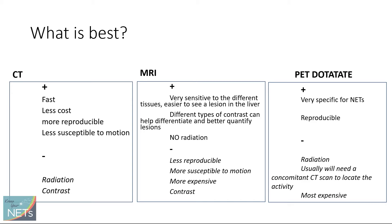MRI is very sensitive to different tissues, making it easier to see a lesion in the liver compared to normal liver parenchyma. Different types of contrast can be used to help differentiate and better quantify lesions, and there's no radiation. However, it is less reproducible, more susceptible to motion because it takes longer to acquire, and more expensive. PET dotatate is very specific for neuroendocrine tumors and very reproducible, but it does use radiation, usually needs a concomitant CT or MR scan to locate activity, and it's the most expensive of all.